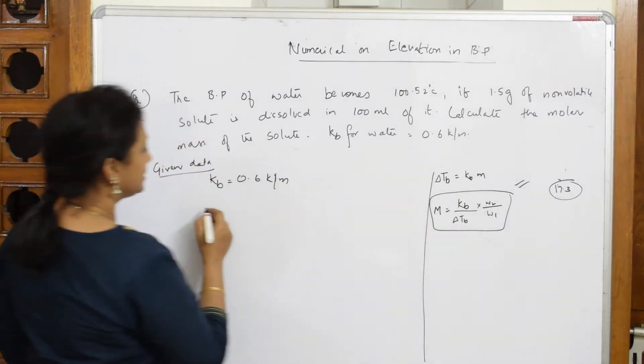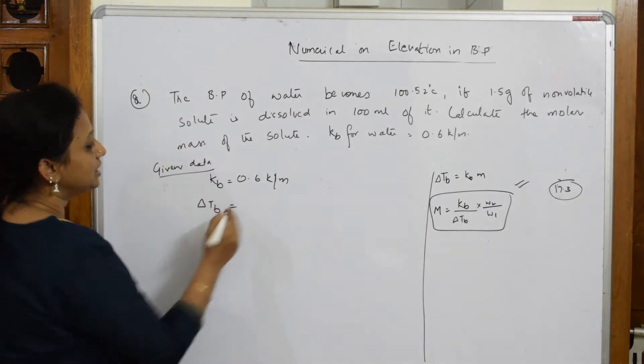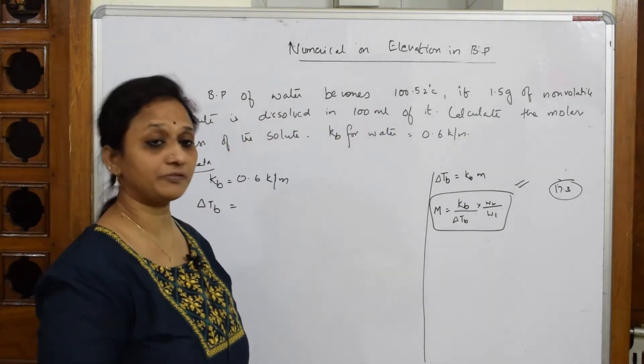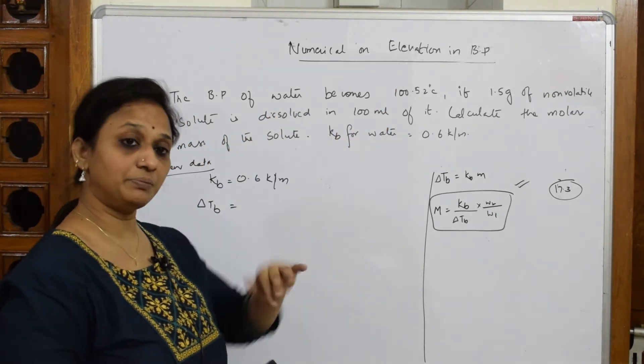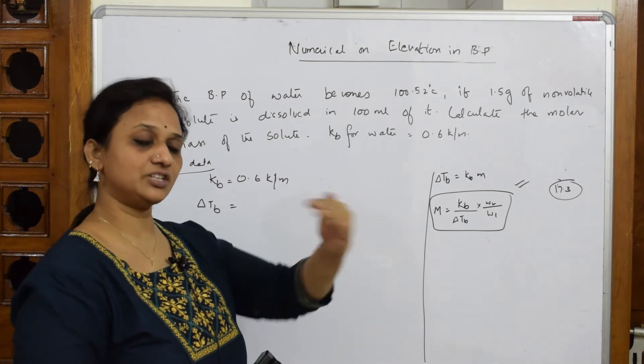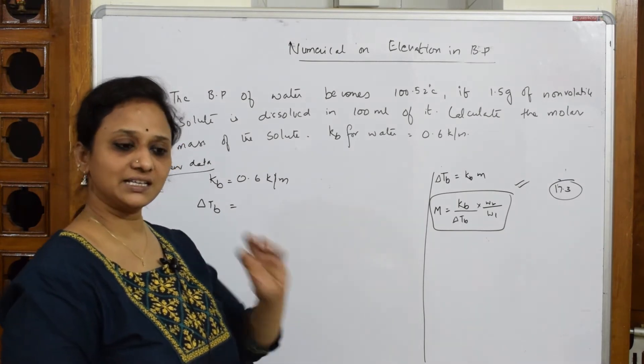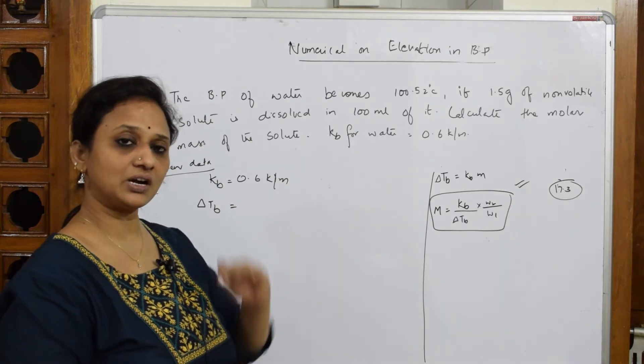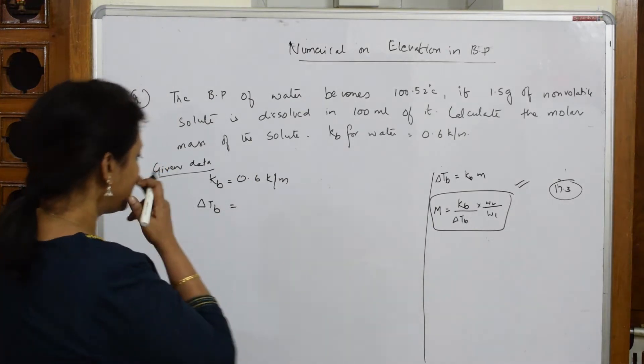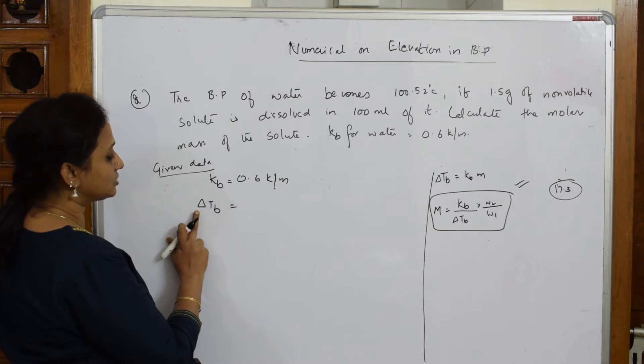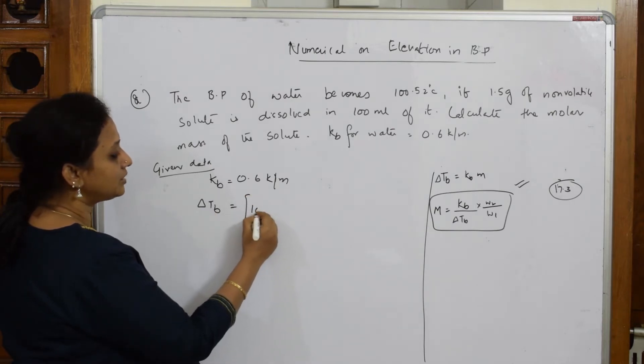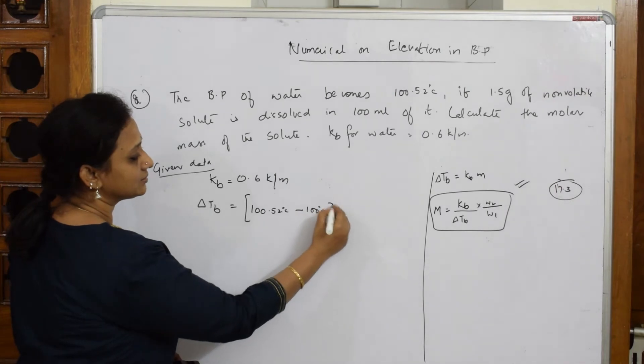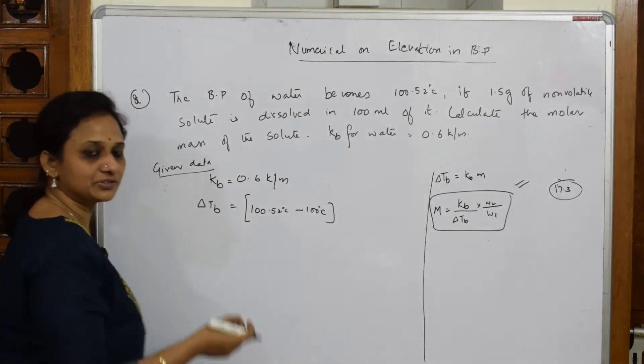Let us see what is delta TB. What do they give me? They said the BP of water becomes 100.52 degrees Celsius. That means there is elevation. They have not given me exact value, but it will raise from 100 degrees to 100.52 degrees they said. Delta TB is 100.52 degrees centigrade minus 100 degrees centigrade. I have to find here. That is the only difference in the numerical.